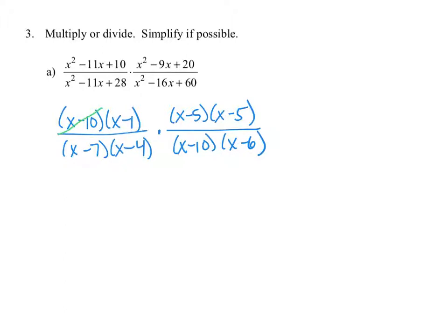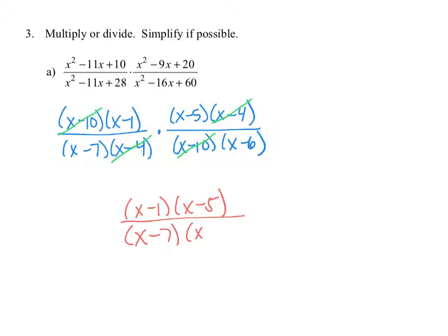We have an x minus 10 in the numerator and denominator that can be divided out. That second numerator should have factors of x minus 5 and x minus 4 — I wrote the wrong factor earlier. We also see a common factor of x minus 4 that can be divided out. So our final answer is x minus 1 and x minus 5 in the numerator, and x minus 7 and x minus 6 in the denominator.